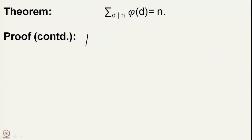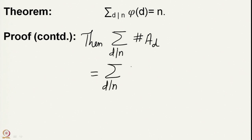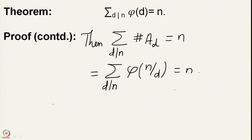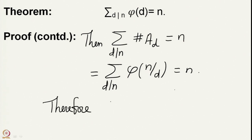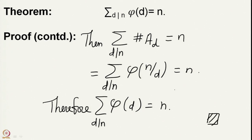Each A_d has cardinality equal to the Euler phi function of the corresponding divisor N/d. Therefore, Σ_{d|N} |A_d| = Σ_{d|N} φ(N/d) = N. Since d varies over divisors of N, the sets {d} and {N/d} are the same sets, and therefore Σ_{d|N} φ(d) = N.